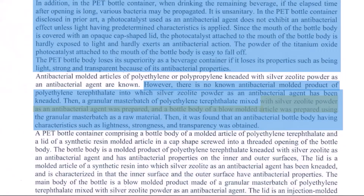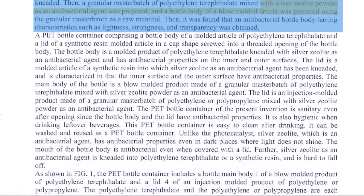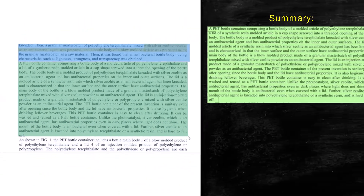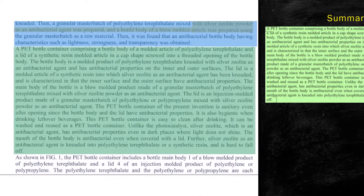Moving to the summary section — we need to find a portion in this disclosure that talks about all the details about the invention without referring to the figures. There is a paragraph which talks about the bottle, the container, and the lid up to figure 1. This will be your summary section. Pause the video, read through it, and note that it provides all the details about the invention.